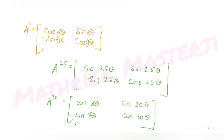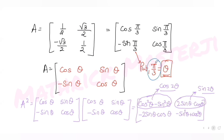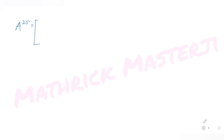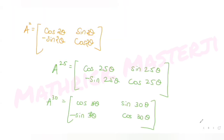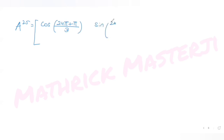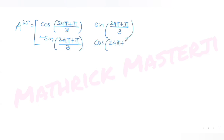Now plugging in θ = π/3 to find A raised to 25: the argument becomes 25π/3. I can write 25π/3 as 24π/3 + π/3, which equals 8π + π/3. Since 8π is a multiple of 2π, it is equivalent to angle 0.